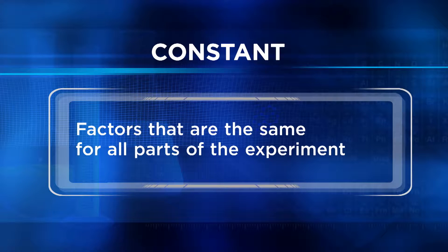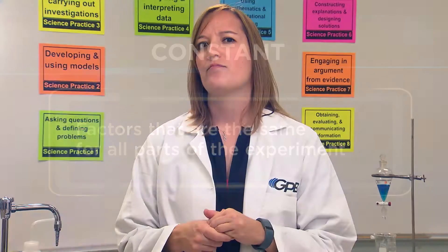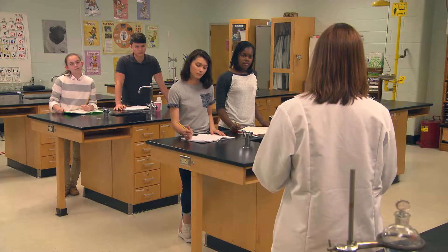Great work. Remember, a constant is a factor that's deliberately kept the same by the experimenter. Any factor that can be changed in an experiment is a variable, and too many variables can ruin an experiment. Who can tell me what that means?